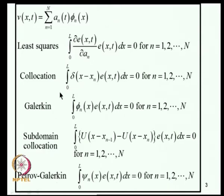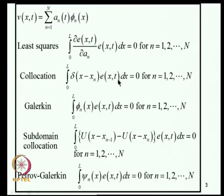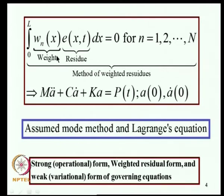All these methods share common features in implementing the method of weighted residuals. In least squares approximation we minimize the total mean square error and get a residue term multiplied by another function; in collocation we also get the residue term multiplied by a weight function. The general format is: we have the residue term, we select N weight functions, and write these equations for N equal to 1 to capital N, thereby leading to a set of ordinary differential equations for the unknown generalized coordinates.